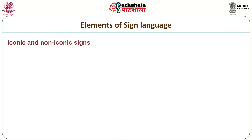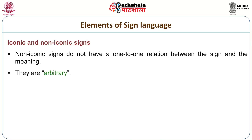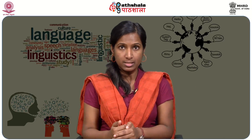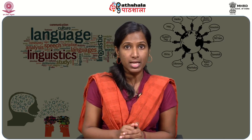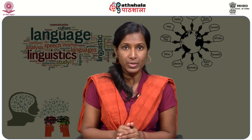Non-iconic signs do not have a one-to-one relation between the sign and the meaning. They are arbitrary and do not reflect the form of the thing or activity being symbolized. For example, signs for 'easy' and 'allow' do not have a one-to-one relation between the sign and the meaning — they are arbitrary.